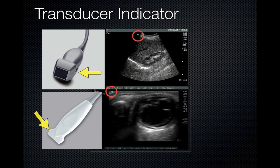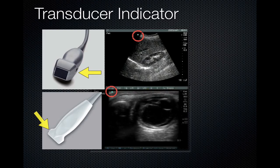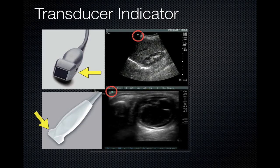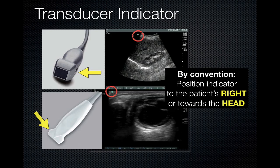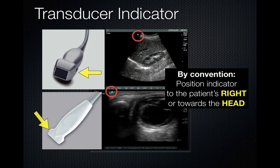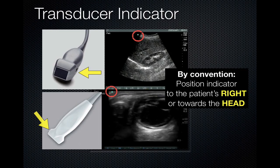For instance, if the dot on the probe is placed toward the patient's head, then the side of the screen where the dot is would be toward the head, and the opposite side towards the feet. By convention, the position indicator placed on the patient's body is oriented towards the right or towards the head.